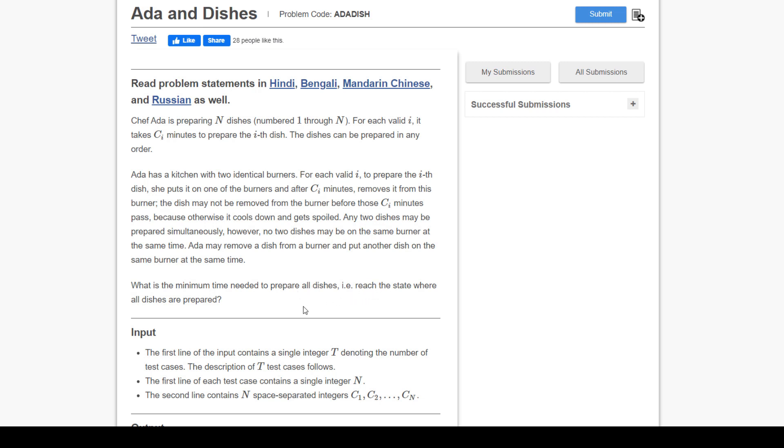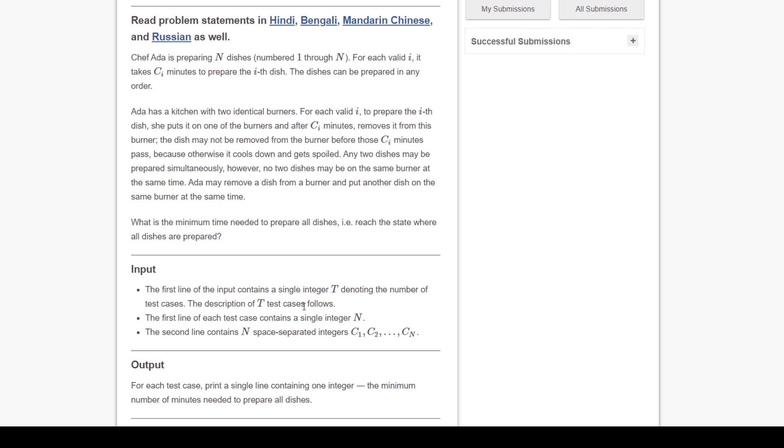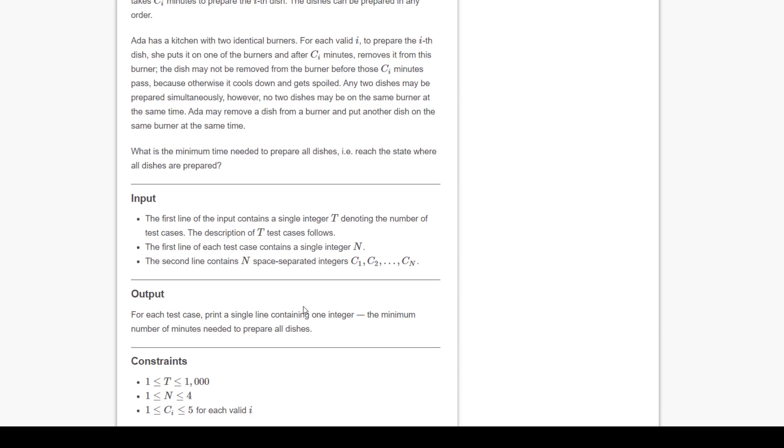Constraints: T should be less than 1000, n should not be greater than 4, and Ci should be maximum 5. The example input is 3 test cases. The first test case has n equals 3.